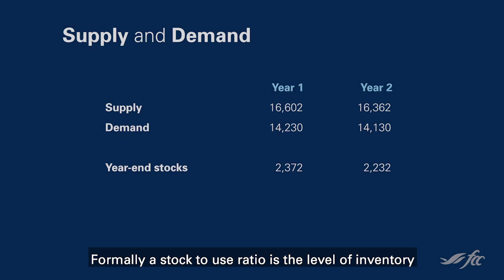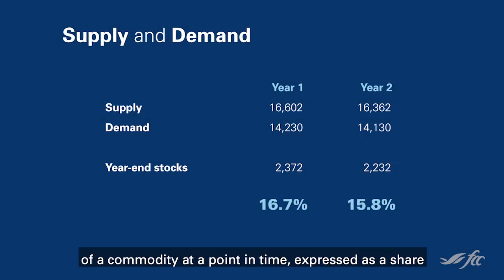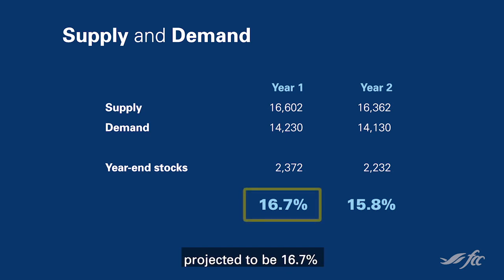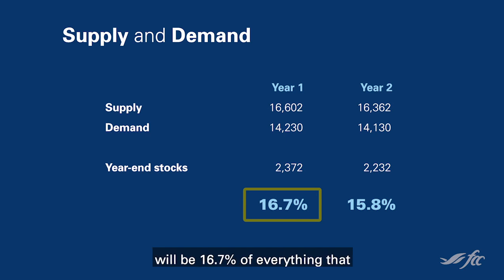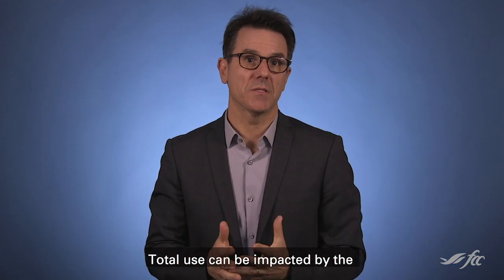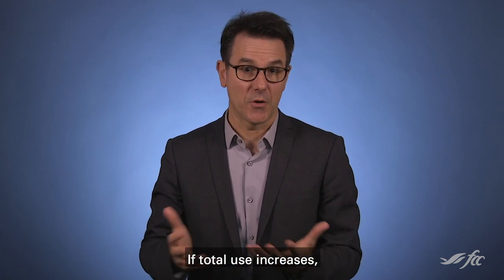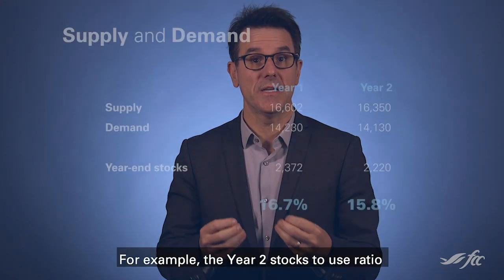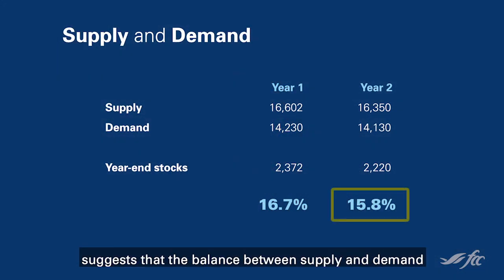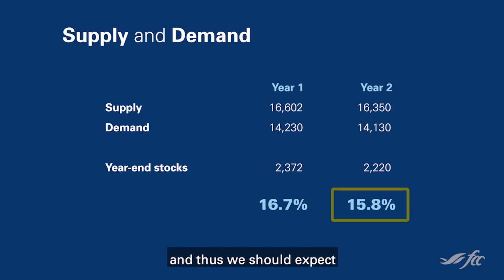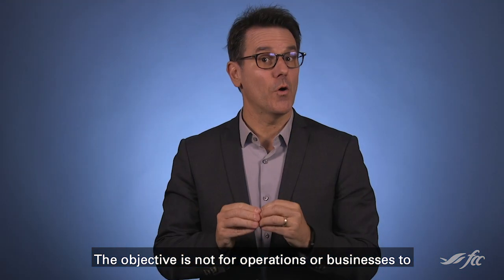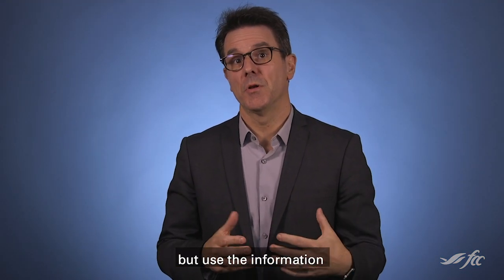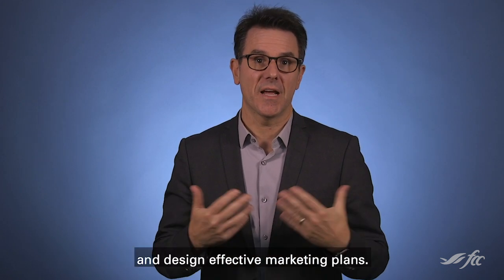Formally, a stock-to-use ratio is the level of inventory of a commodity at a point in time expressed as a share of everything that is being used throughout the year. For example, a stock-to-use ratio projected to be 16.7% at the end of the marketing year means that inventories will be 16.7% of everything used in the supply chain. Total use can be impacted by demand for animal feed, human consumption, or exports — if total use increases, it would lower the stock-to-use ratio. Markets react to information in the stock-to-use ratio; a tighter year 2 ratio suggests higher prices should be expected. The objective is not for businesses to form their own price projections, but to use this information as a guide to understand price movements and design effective marketing plans.